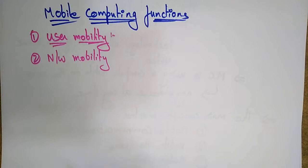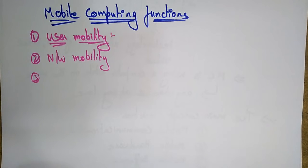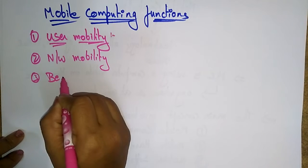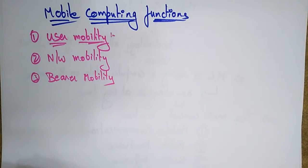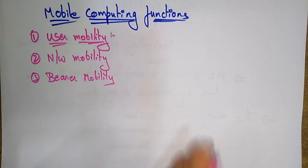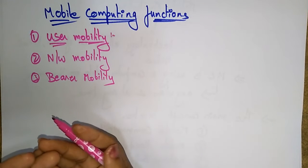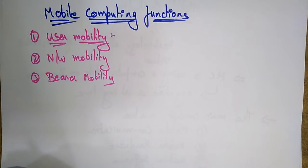Because of network mobility, you are accessing your mobile devices in other countries as well. That is another function of mobile computing. Next is bearer mobility. Bearer mobility means the user should be able to move from one bearer to another bearer and use the same services — bearer is essentially the service provider.